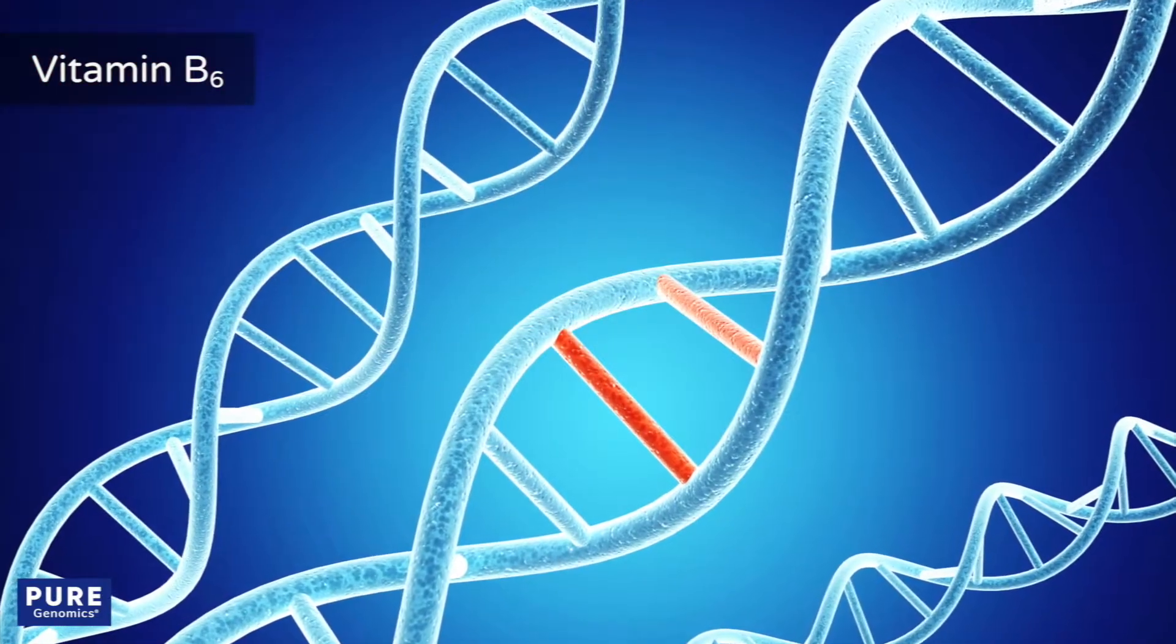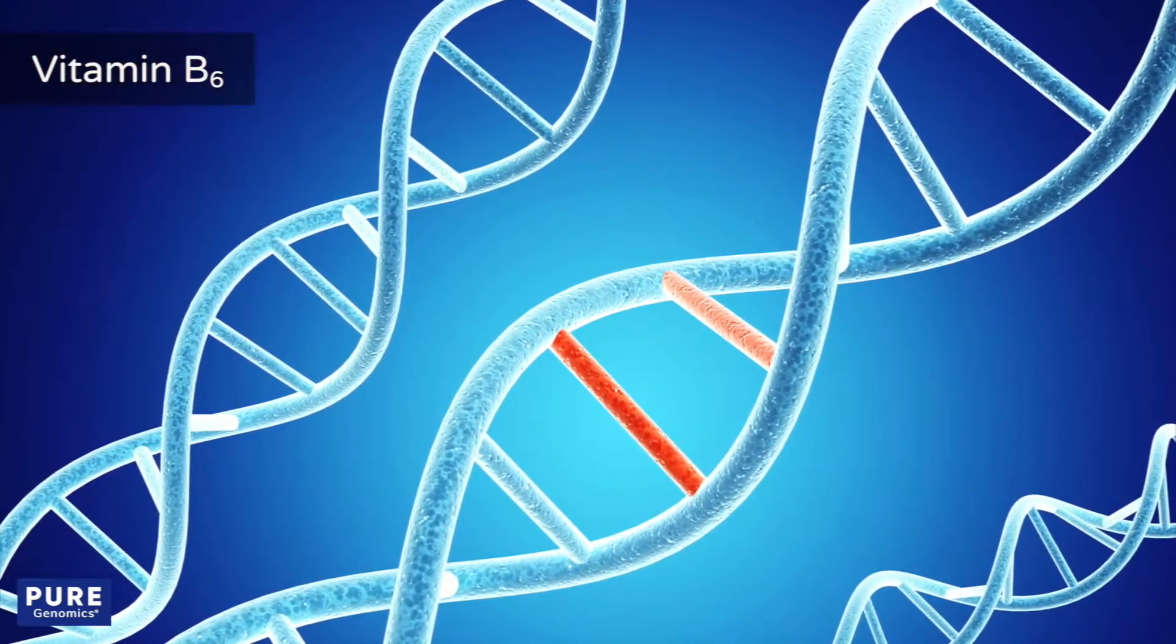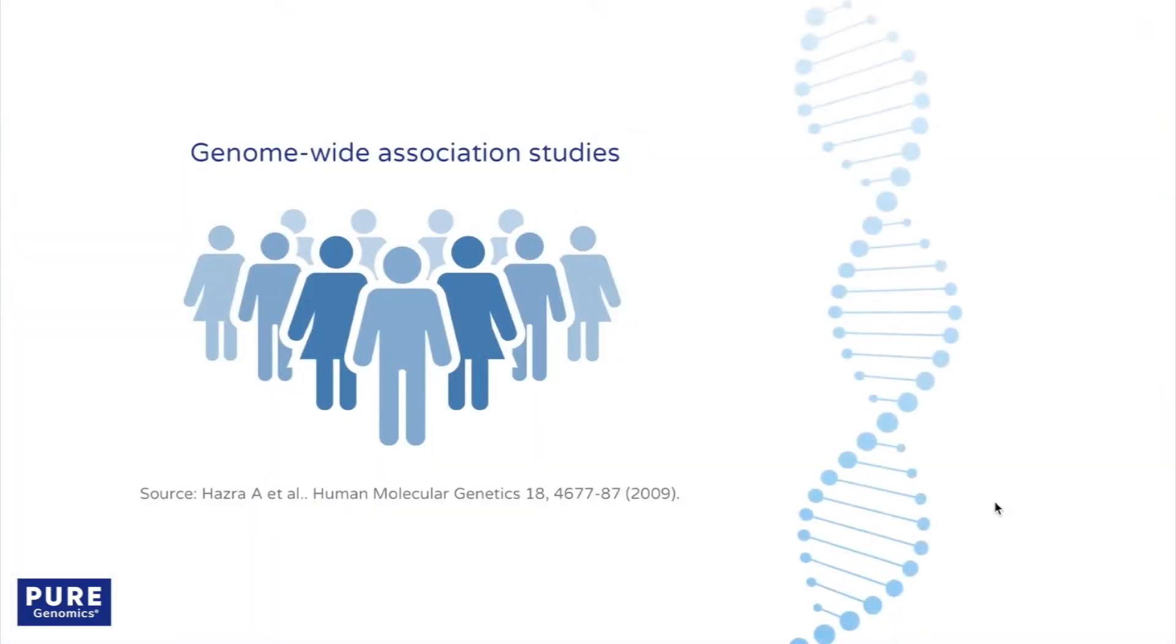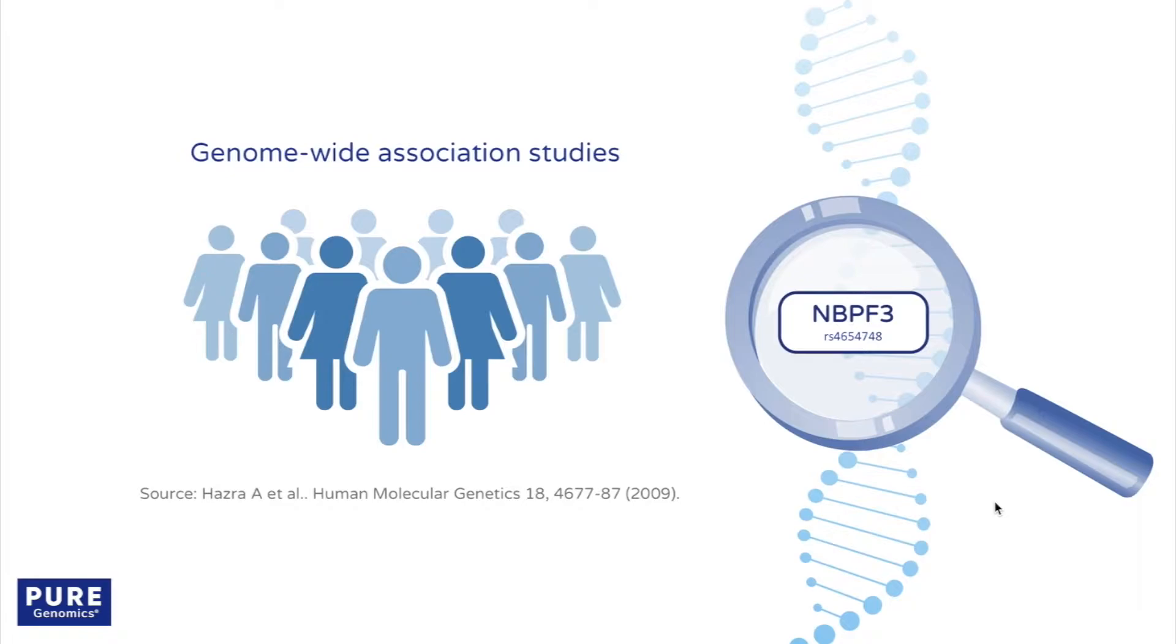Studies suggest that genetic factors affect dietary requirements. In genome-wide association studies, a common variation in the NBPF3 gene was linked to lower plasma B6 levels, possibly due to faster clearance.